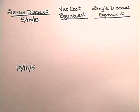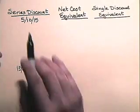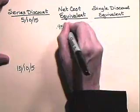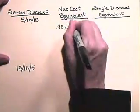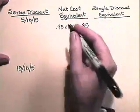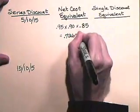Let's look at a problem in which we find a single discount equivalent to a series discount. Find the net cost equivalent and the single discount equivalent for a 5-10-15 series discount. It's very important that we remember that we never round net cost equivalents or single discount equivalents. The net cost equivalent is found by multiplying the complements of the discounts. So a 5% discount complement will be 0.95, the 10% complement will be 0.90, and 15% will be 0.85. When we multiply these, we get a net cost equivalent of 0.72675.